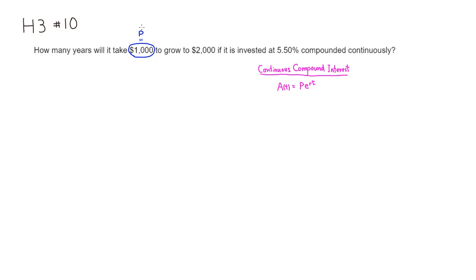And grow to $2,000. So this is going to be the amount after t years. So this is going to be our A of t.